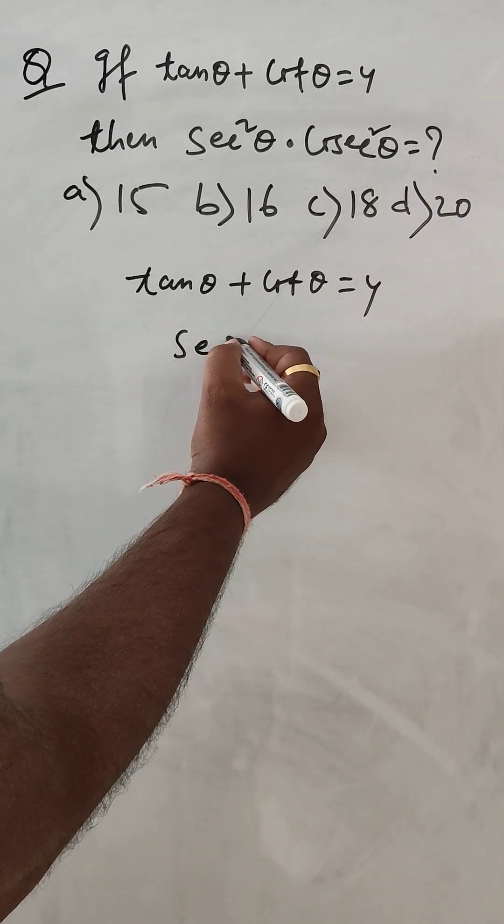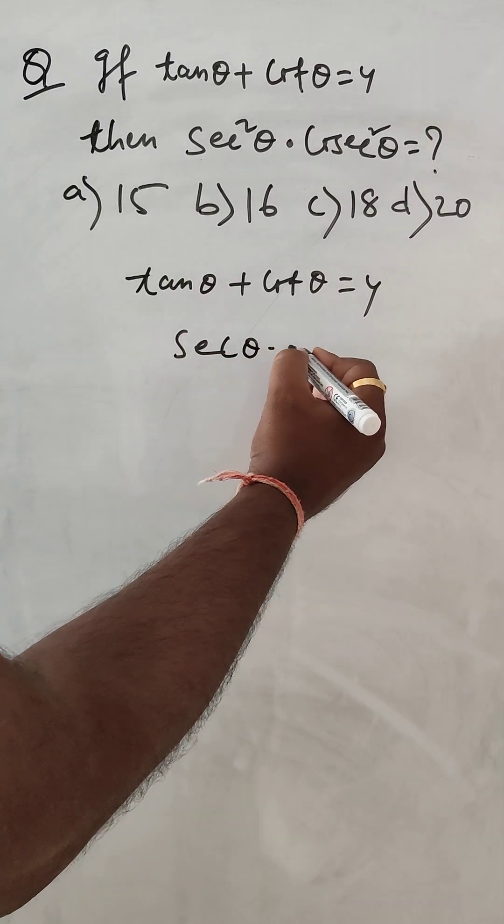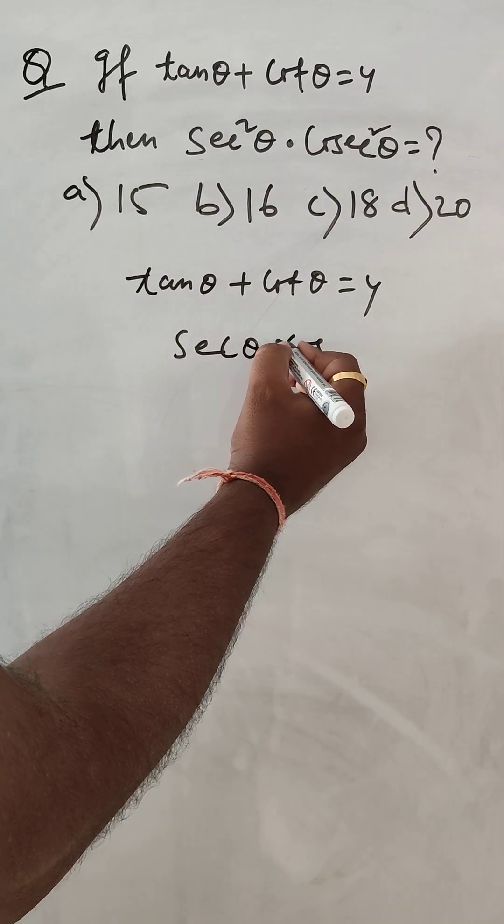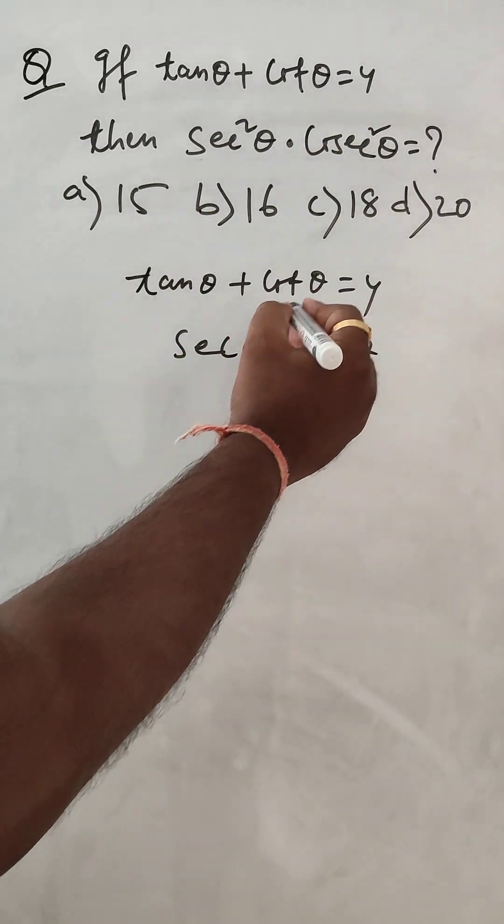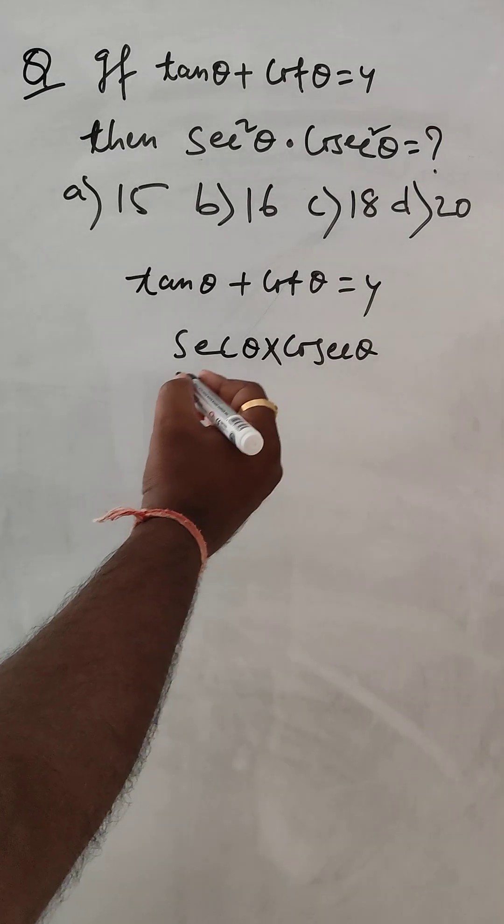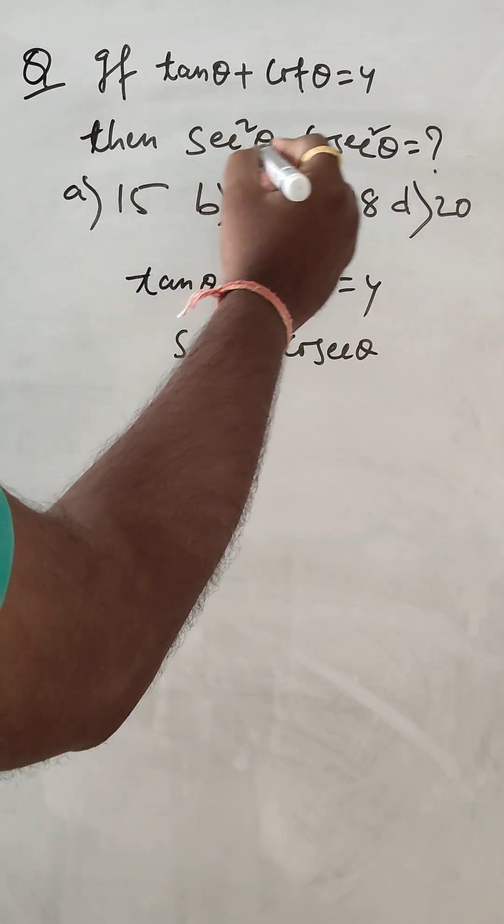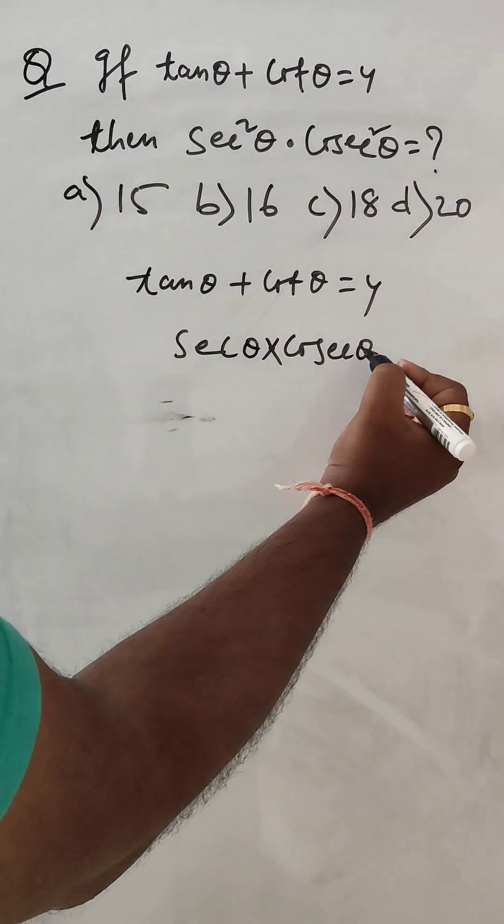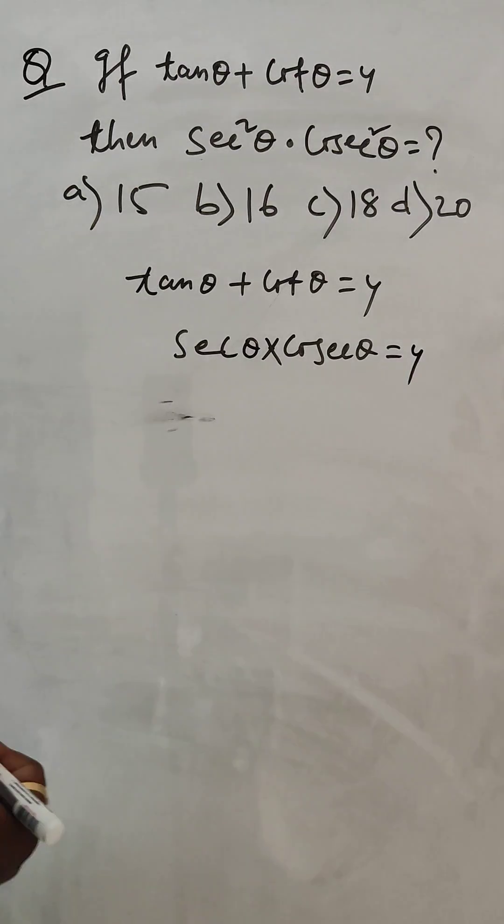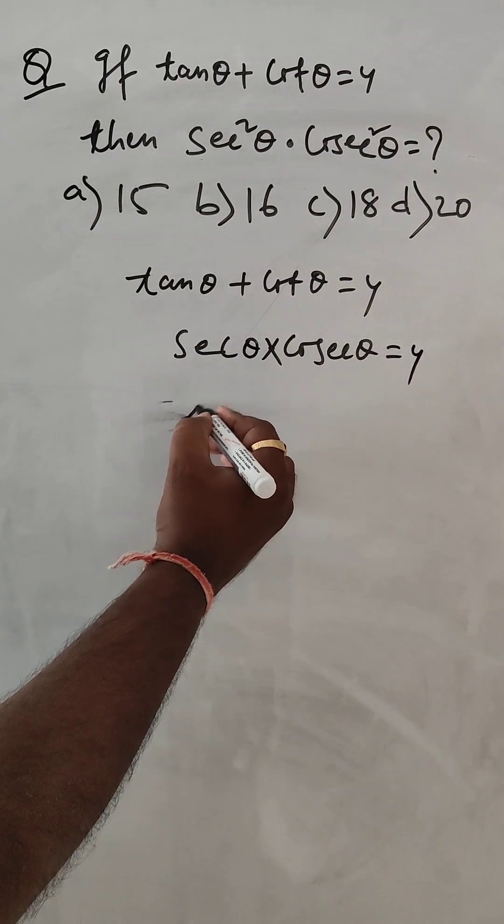This is equal to this. Okay, now then what we have to get is this one: sec square theta. Now this is equal to 4, right? So sec square theta into cosec square theta is equal to 4 square.